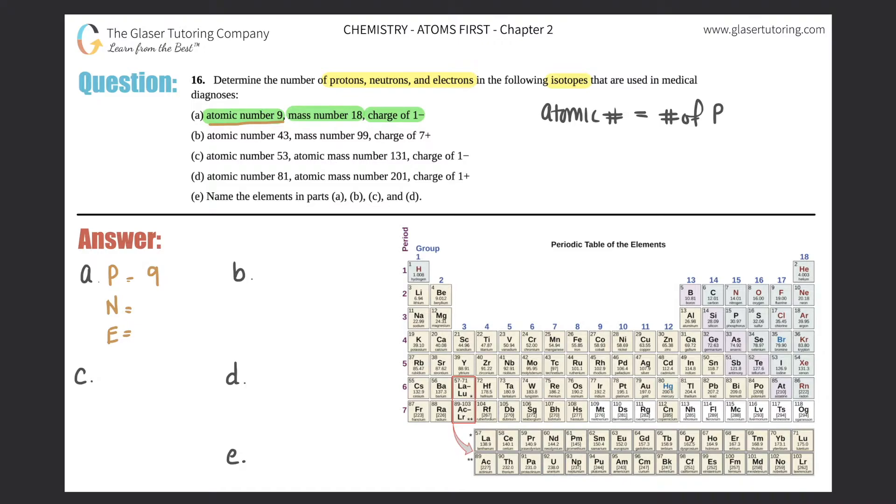Neutrons always comes from the mass number. Now here, the mass number is always protons plus neutrons. So if we know the number of protons, which we do, we know that there's 9 protons, we can figure out how many neutrons we have by doing the subtraction. So if we have 18 equals 9 plus X, X would equal 9, right? If you do simple algebra, solve for X, subtract 9, you would get 9 neutrons.